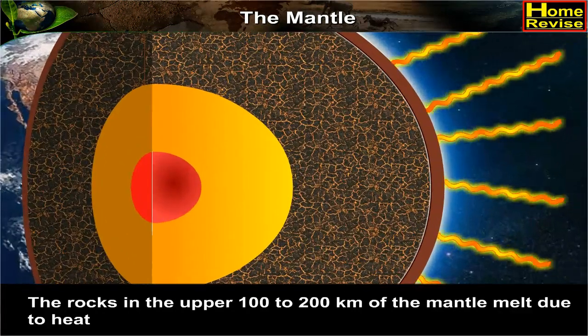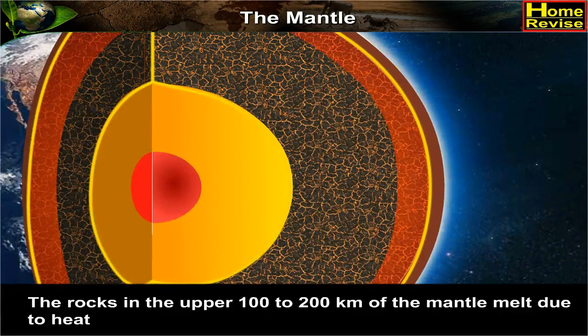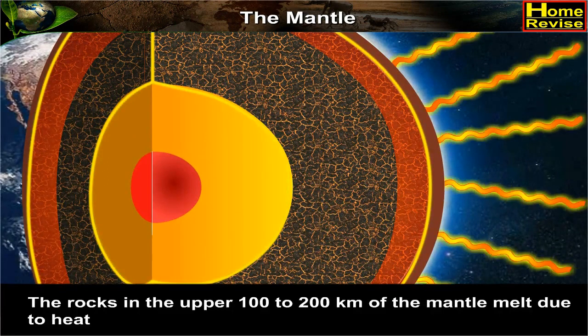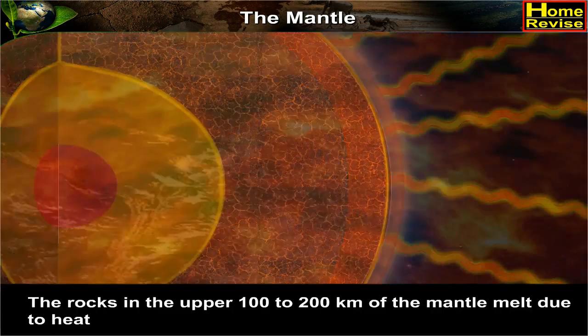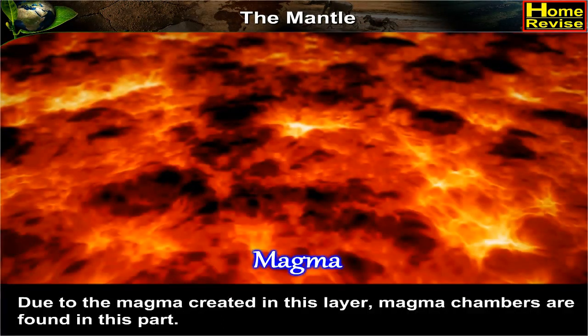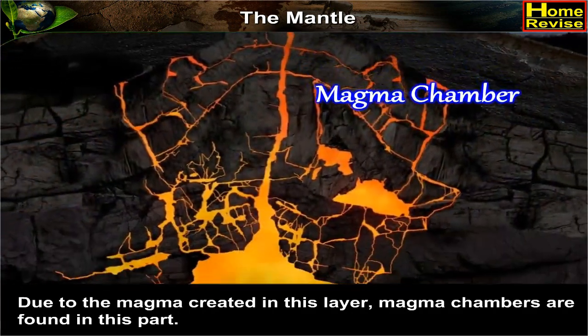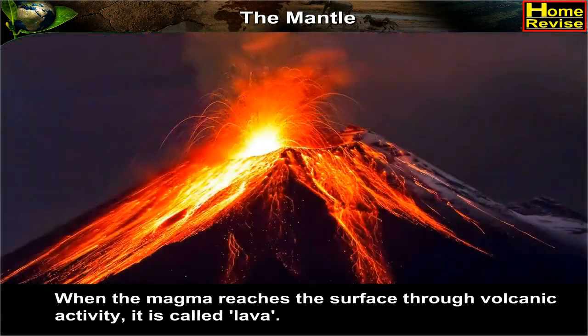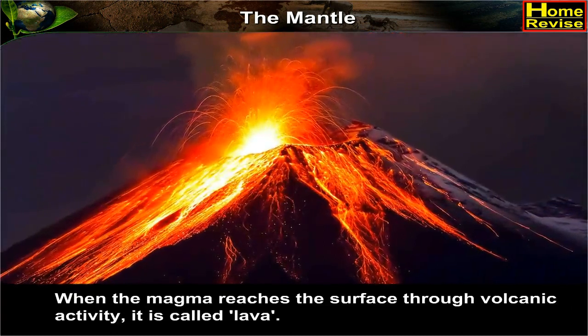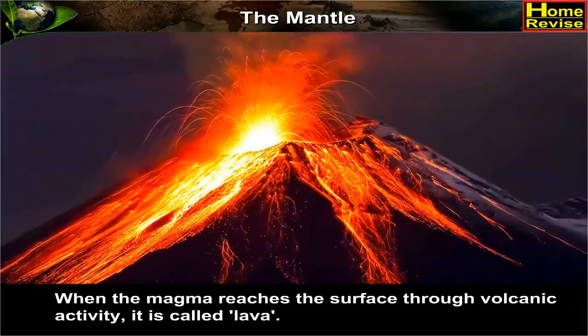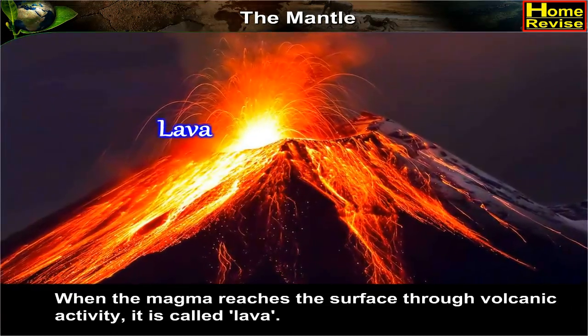The rocks in the upper 100 to 200 kilometers of the mantle melt due to heat. Due to the magma created in this layer, magma chambers are found in this part. When the magma reaches the surface through volcanic activity, it is called lava.